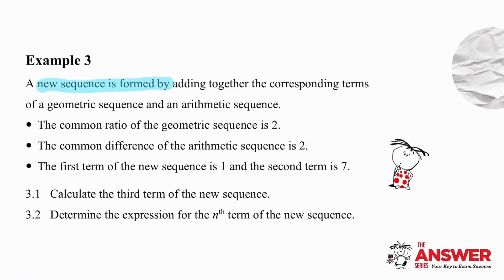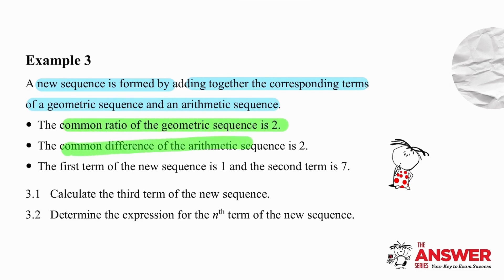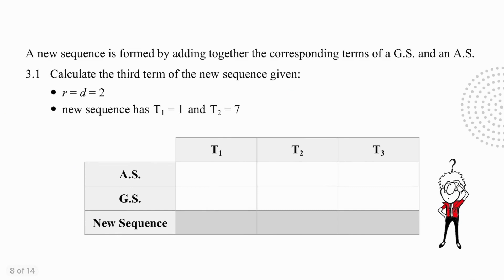In example 3, we have a new sequence formed by adding together the corresponding terms of a geometric sequence and an arithmetic sequence. The common ratio of the geometric sequence is 2 and the common difference of the arithmetic sequence is 2. We need to understand that the corresponding terms of the geometric and arithmetic sequences are added to form the new sequence.